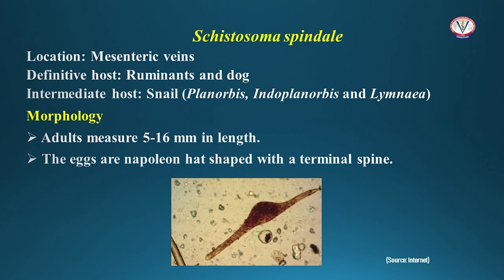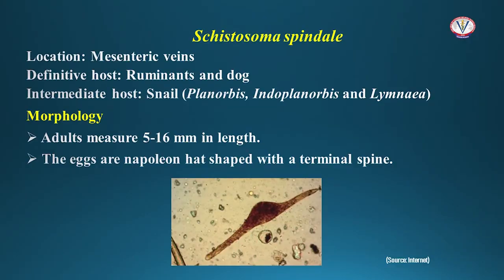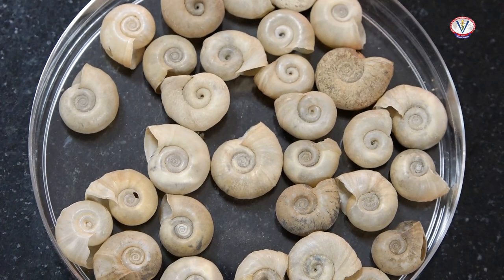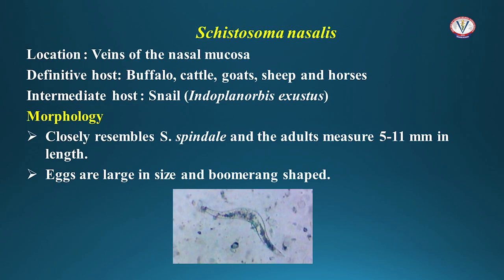Schistosoma spindale is present in the mesenteric veins of ruminants and dogs. Snails of genus Planorbis, Indoplanorbis, and Lymnaea act as the intermediate host. Adults measure around one to one and a half centimeters in length. Eggs are typically Napoleon-hat-shaped with a terminal spine. Schistosoma nasalis is present in the veins of the nasal mucosa of buffalo, cattle, sheep, and goat. Snails of genus Indoplanorbis act as the intermediate host. It closely resembles Schistosoma spindale and the adult is around one centimeter long. Eggs are large and typically boomerang-shaped.